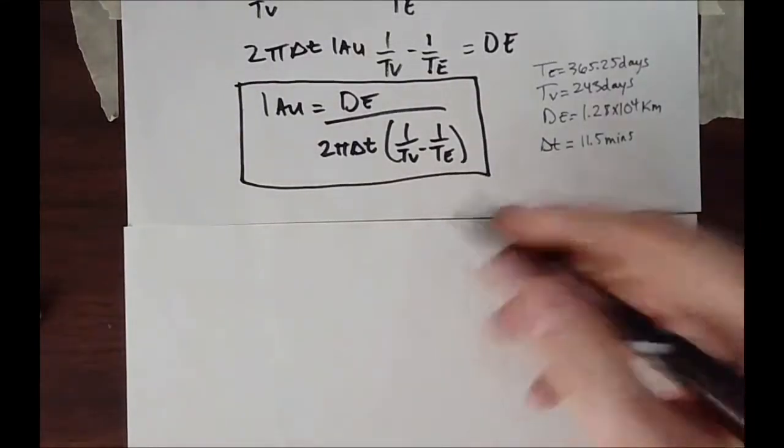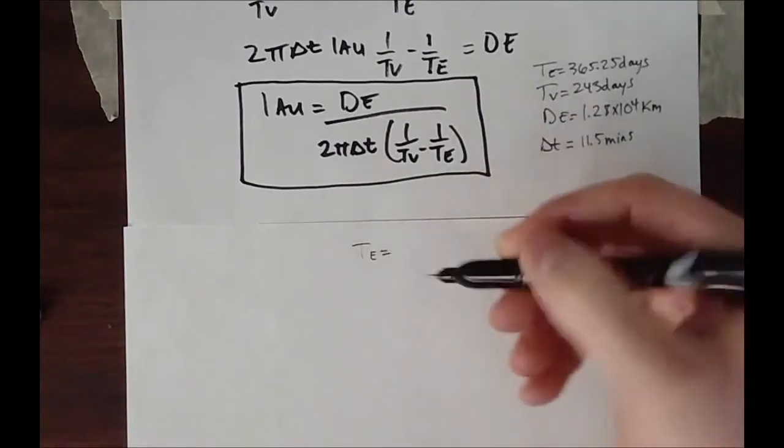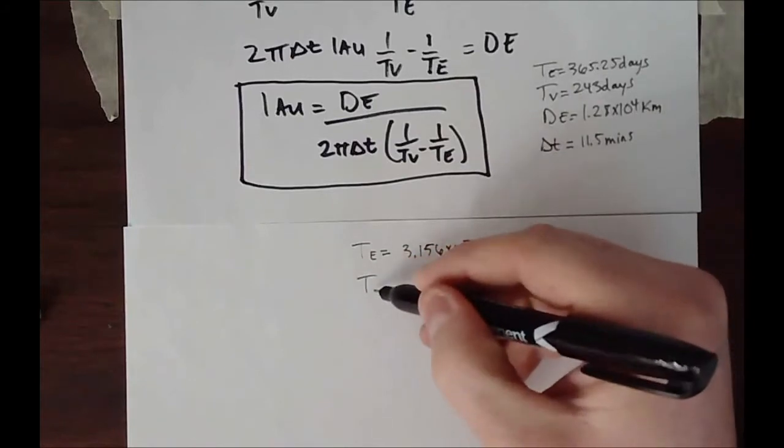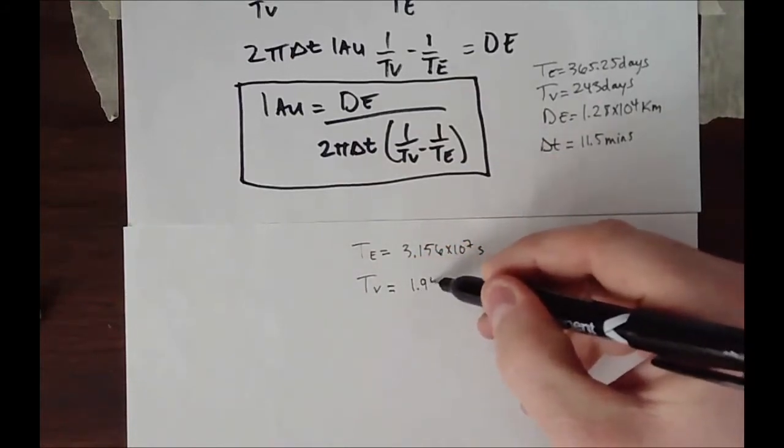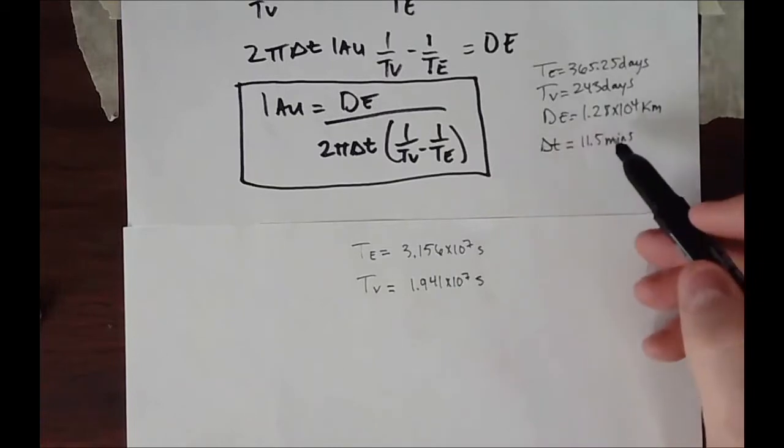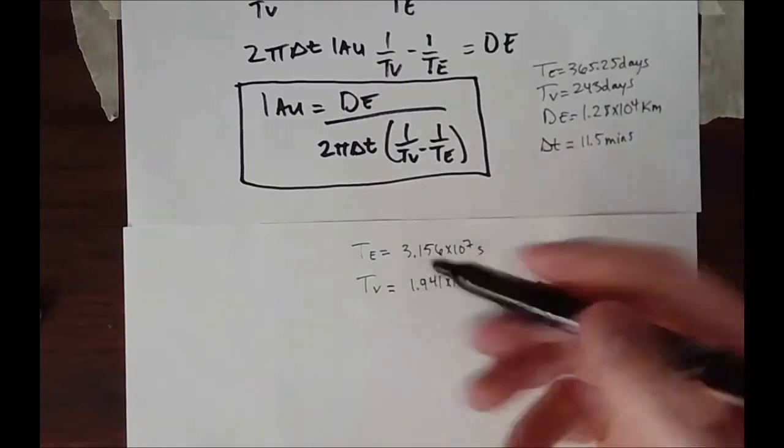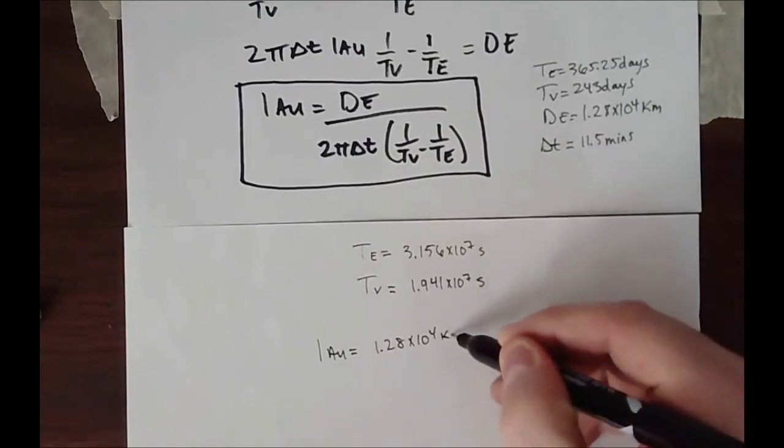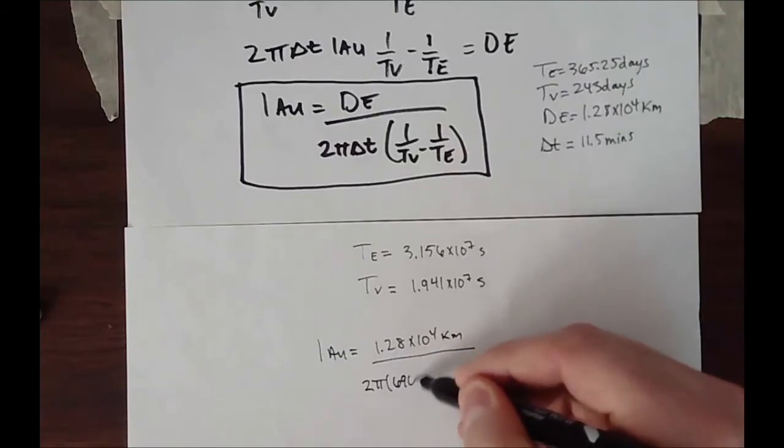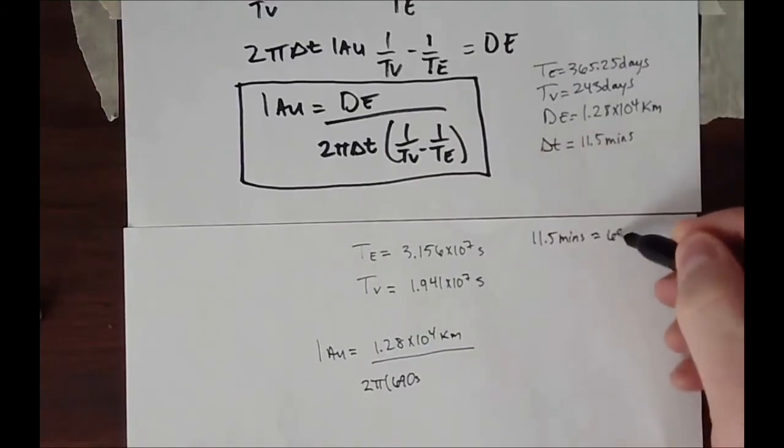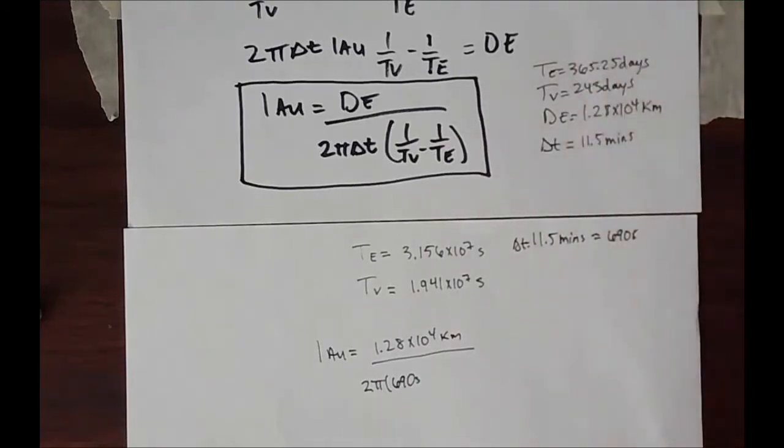Now, with this equation in mind, and we have these variables, we have to convert everything to seconds. So the period of Earth, when you do the math, you get about 3.156 times 10 to the 7th seconds. That's how many seconds are in a year. And the period of Venus is about 1.941 times 10 to the 7th seconds in a year for Venus as well. So these are our orbital period times. And we know the diameter of the Earth is just 1.28 times 10 to the 4th kilometers. We just plug everything into our equation. So 1.28 times 10 to the 4th kilometers, 2 pi times 690 seconds. Now, that is our delta T. That is 11.5 minutes. That gives you approximately 690 seconds. So this is our transit time. Notice this transit time will be different for different positions on Earth. But as long as you know those positions and those times, then you should get to pretty much the exact same thing.